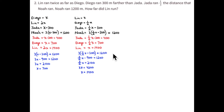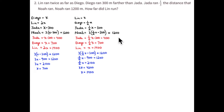Over here, same idea — a bunch of different expressions and their values. So Jada's expression equals 400, Diego's expression equals 700, and Noah's expression looks pretty tough, so practice it. Three times (one-half x minus 300) equals Noah's run, 1,200 meters.